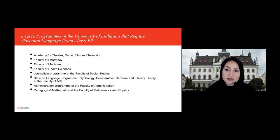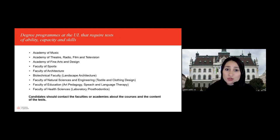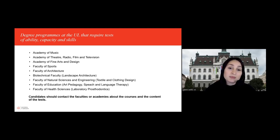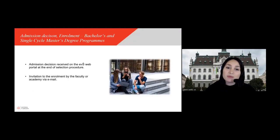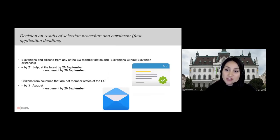Here you can see which programs on bachelor level require a Slovenian language exam or certificate. For some programs it is also required to pass a test of ability, capacity and skills — please ask the faculties or academies for additional information about the content of the test. Dates are published on the Evosh web portal and our webpage. If you are accepted, you will be invited to enroll by the faculty via email and enrollment usually takes place in September. Decisions in the first application period for EU students will be by 21st July and at the latest by 20th September; for non-EU students by 31st August.